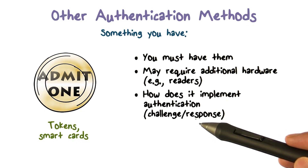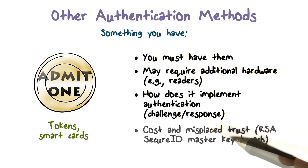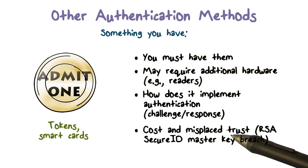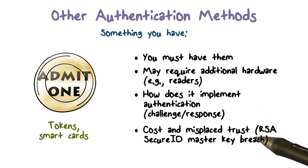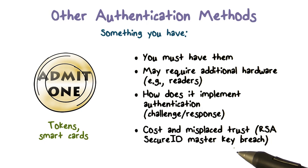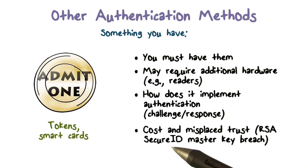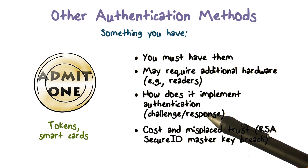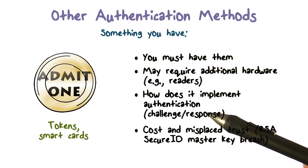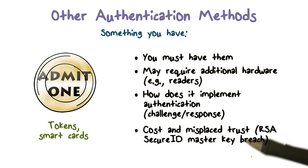On PIN-and-chip cards, the chip can do this kind of computation and generate a response. That's how this is implemented. The problem is there is added cost. And sometimes there could be misplaced trust in these tokens or cards. There's the well-known case of the RSA breach, where the master key was compromised. As a result, all the SecureID tokens that RSA's stronger authentication relied on could no longer be counted on for correct authentication. So there's added cost, but also vulnerabilities and attacks that can limit the strength of authentication these tokens provide. With something you have, you don't need to remember complex passwords, but we need to be aware that they have their own set of problems.